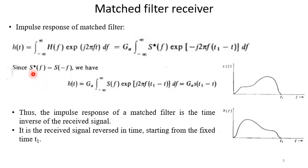Now since S*(f) equal to S(-f) we now have h(t) equal to G_A integration S(f) exponential j2πf(t_1 - t) df. That means it is equal to G_A s(t_1 - t).